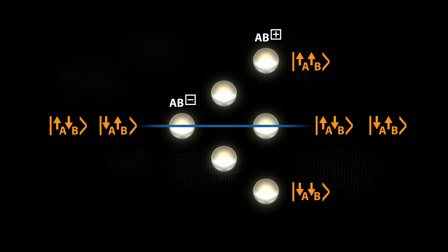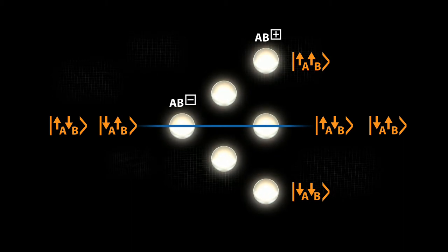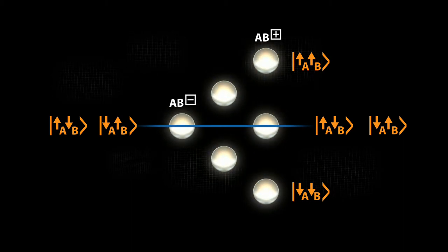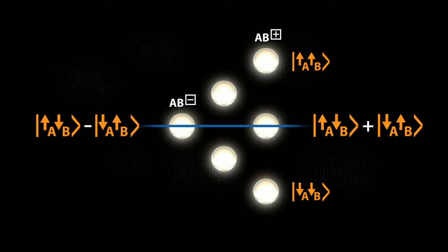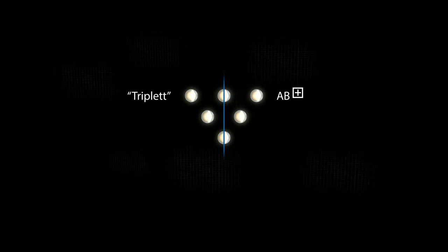Symmetry or anti-symmetry under exchange of A and B can be found again as a principle in two particle states. Combinations of two indistinguishable spins overlap, creating joint vibrational modes that are either symmetric or anti-symmetric under exchange of spins A and B. The three symmetrical spin combinations are called triplets. The anti-symmetric combination is known as a singlet.